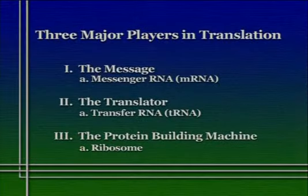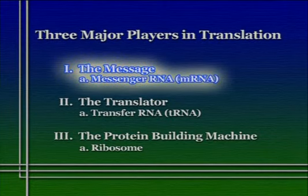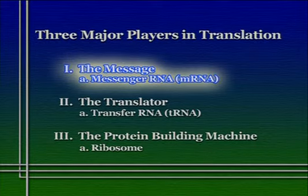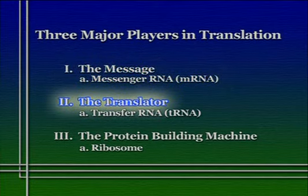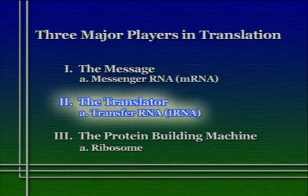Cells have come up with an extremely clever trick for accomplishing just this task. The process of translation involves three major players. First, there's the message. Second, there's the translator. And third, there's a protein-building machine. The message, of course, is the messenger RNA — a long polymer that has no inherent structure other than the sequence of bases, a sequence that specifies codons used as a template for building the protein. The translator is a molecule of a different kind of RNA that we call transfer RNA, or tRNA for short.